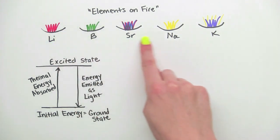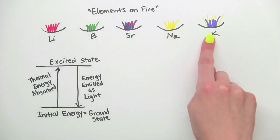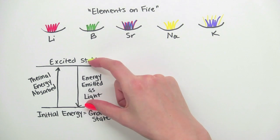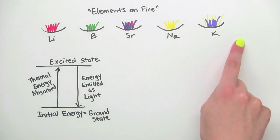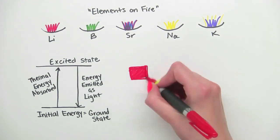So why do different elements have different colored flames? Because the difference in energy between the ground state and the excited state is unique for each element. And what does energy have to do with it? Well, the human eye perceives photons or light particles of different energies as different colors. So red light is a lower energy than yellow, which is a lower energy than blue. Think about it like a rainbow spectrum.